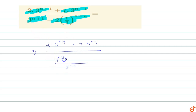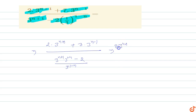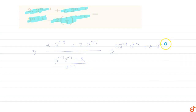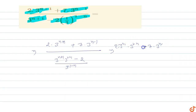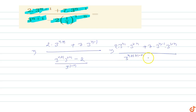So this will become 3 power n plus 1 into 3 power 1 minus n minus 2. Multiplying through, we get 2 into 3 power n plus 1 into 3 power 1 minus n, plus 7 into 3 power n minus 1, upon 3 power n plus 1 into 3 power 1 minus n. Using exponent rules, the exponent equals n plus 1 plus 1 minus n minus 2.